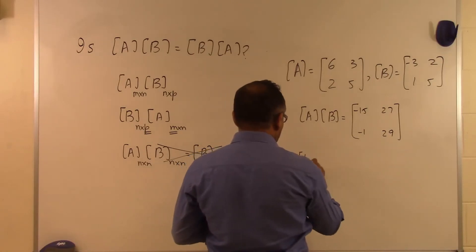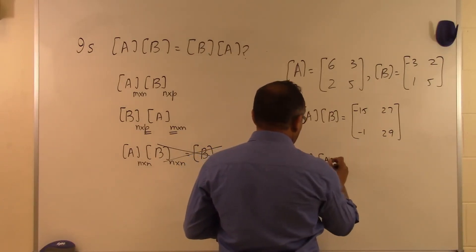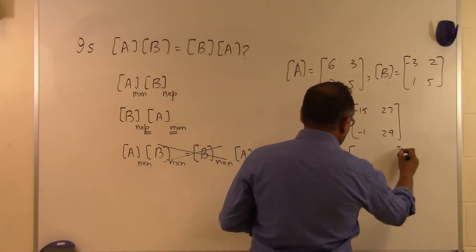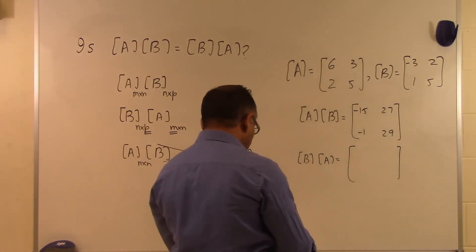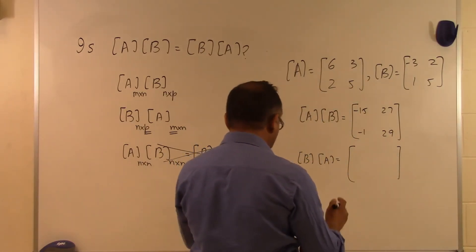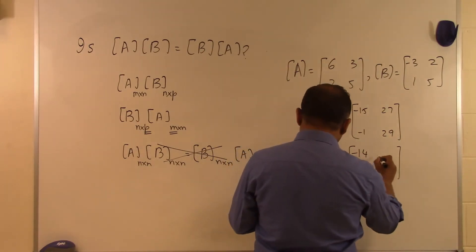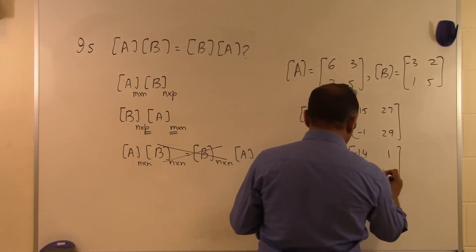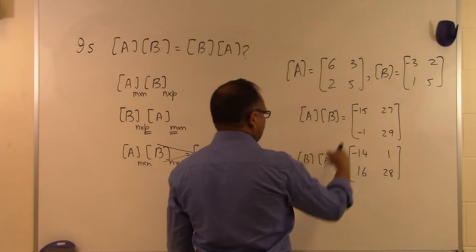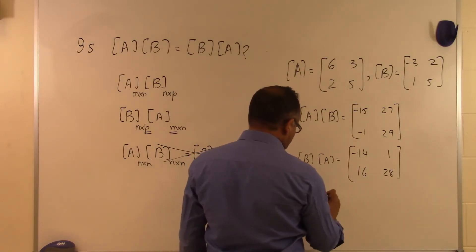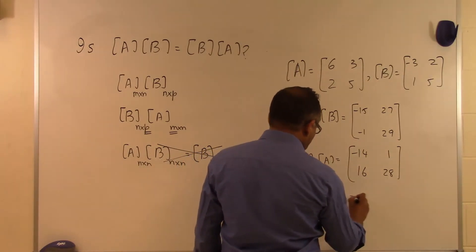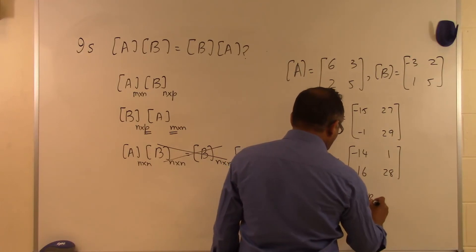And then if we want to calculate B times A, do we get the same matrix? Let's see what we get for B times A. B times A turns out to be [-14, 1; 16, 28]. And that's not the same matrix. So in this case, A times B is not equal to B times A.